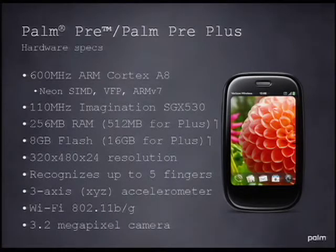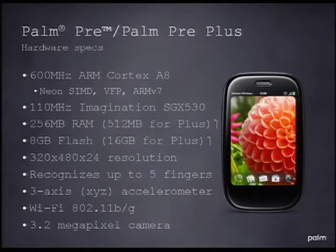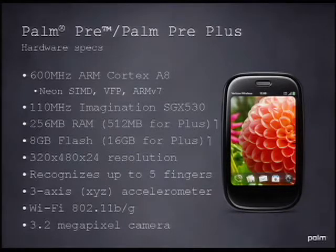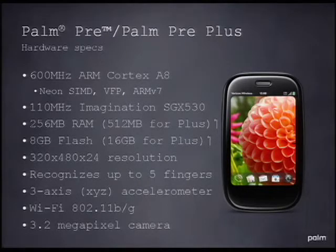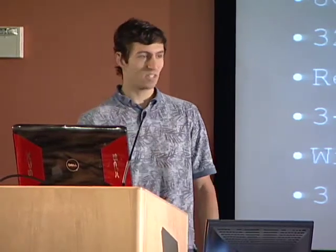The Pre has 256 MB of RAM, but if you're running the Pre Plus, you get double that. Target 256 MB as your baseline. It has 8 gigs of flash, a 320x480 screen resolution at 24 bits per pixel — so you get full RGB resolution. It recognizes up to five fingers for multi-touch, has a 3.2 megapixel camera, and a three-axis accelerometer covering X, Y, and Z.